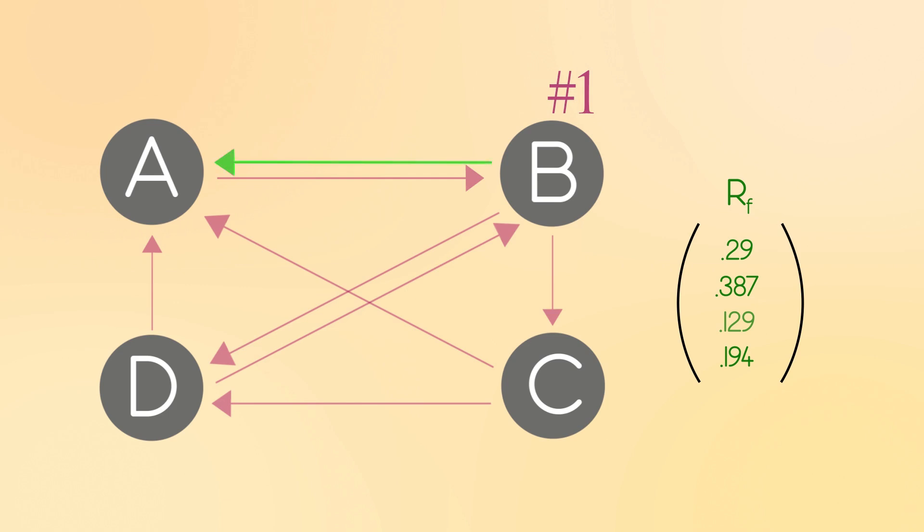I mean, B endorses A back, but it's one of three links that B gives out, so not as meaningful. See, it's not about links, it's about quality links. You need endorsements, but from credible places, and the algorithm accounts for all of this.